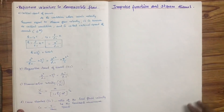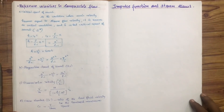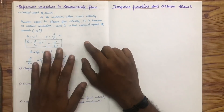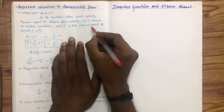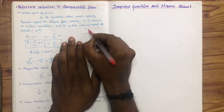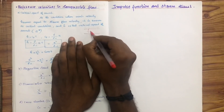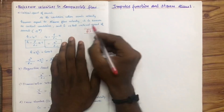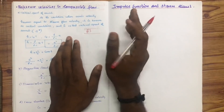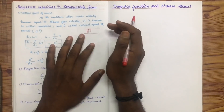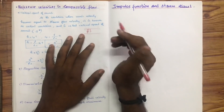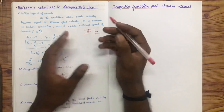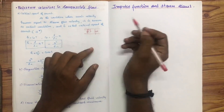Next we consider the reference velocity. The reference velocity is related to the critical speed of sound. In the flow, a disturbance propagates with velocity a. If the flow velocity V creates a particular sound wave, the flow has a small acoustic velocity a.